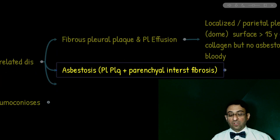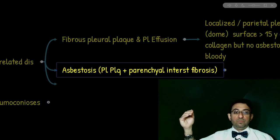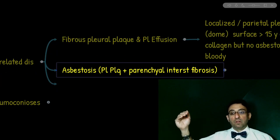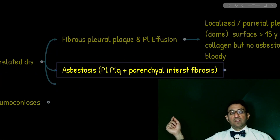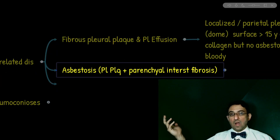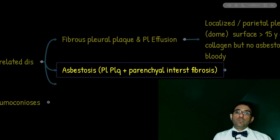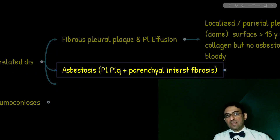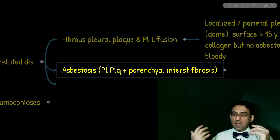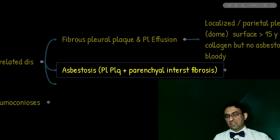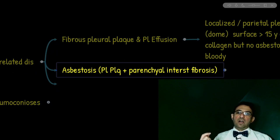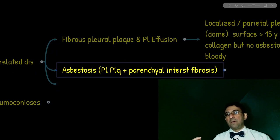Moving to asbestosis as an interstitial lung disease, we have a patient with restrictive type pulmonary function test. All lung volumes are reduced. FEV1 to FVC ratio could be normal or increased because the FVC reduction is more significant or out of proportion to the reduction of FEV1. If you have pleural plaque plus a restrictive lung pattern, that's enough to say it's asbestosis. On imaging, asbestosis shows evidence of interstitial fibrosis affecting the lung parenchyma, while in simple pleural plaque there is no lung parenchymal involvement.